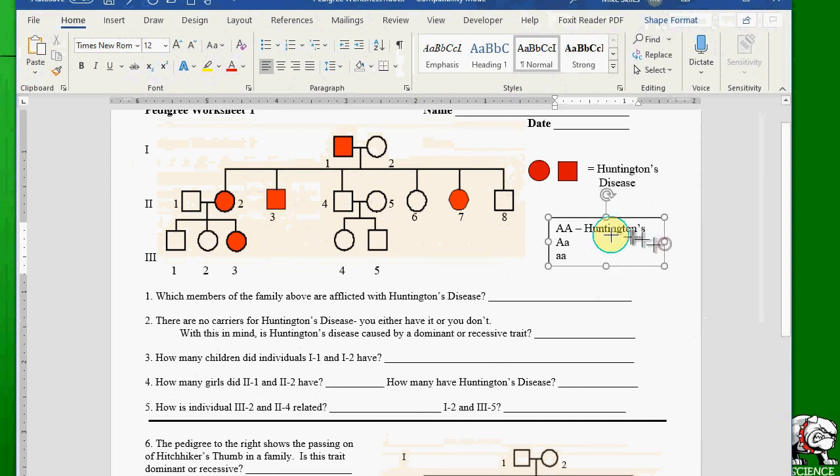Because if you have the dominant trait, you have the disease. What about capital A, lowercase a? Well, again, you have capital A, so this is also Huntington's disease.